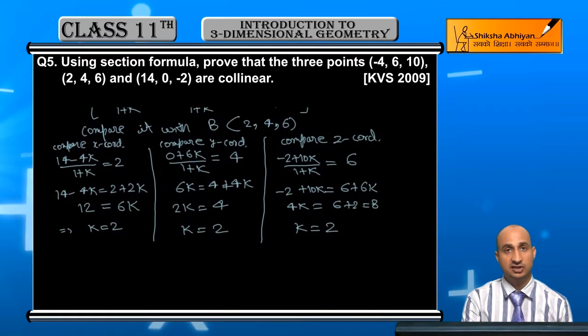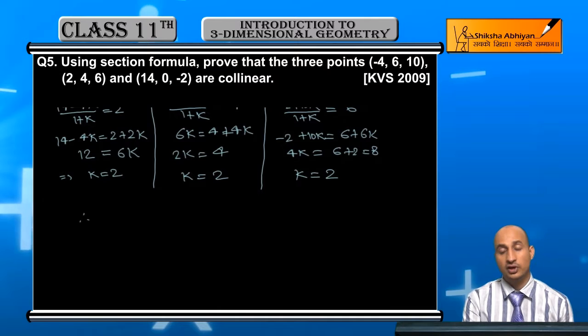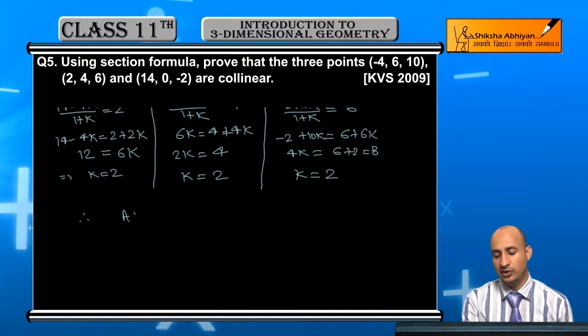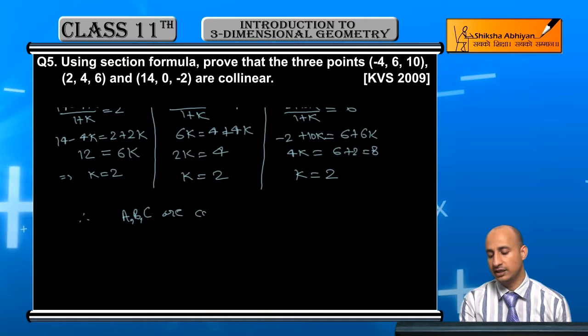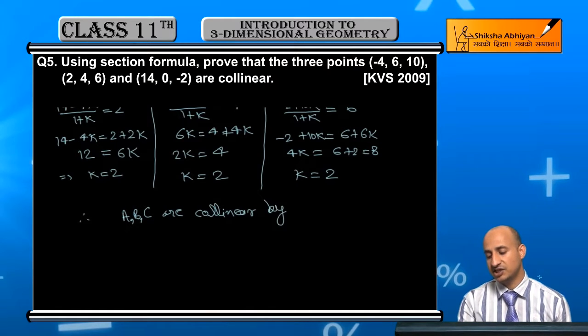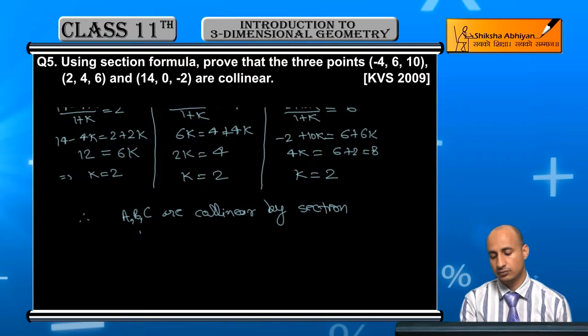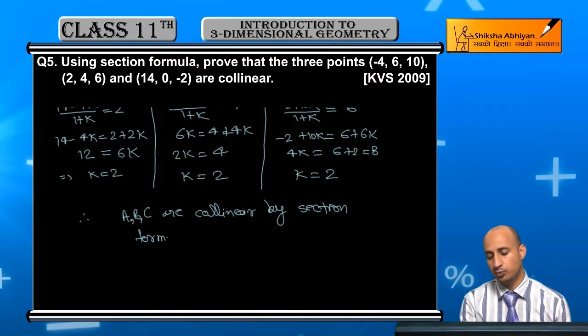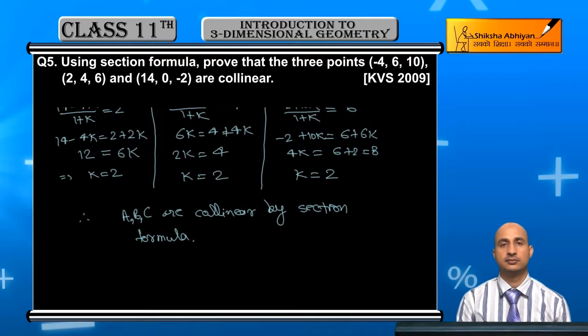Since all 3 times k is equal to 2, therefore I can say A, B, C are collinear by section formula. So this is collinear, proof by section formula.